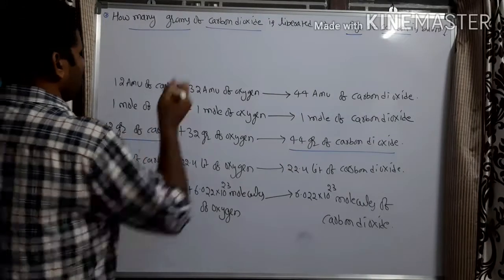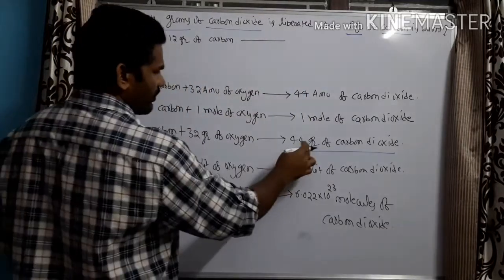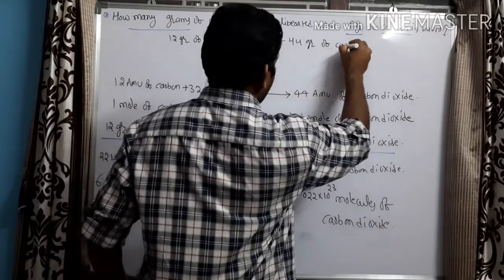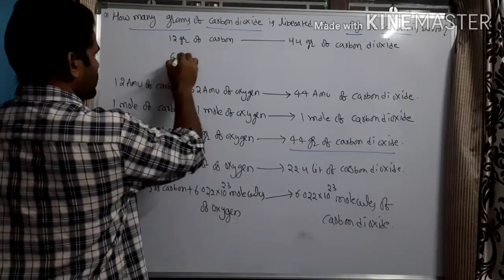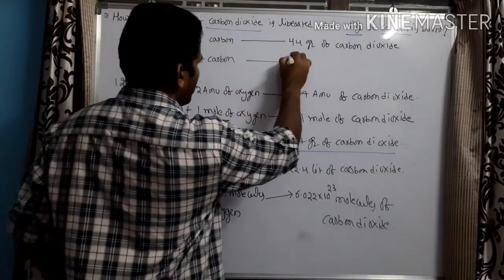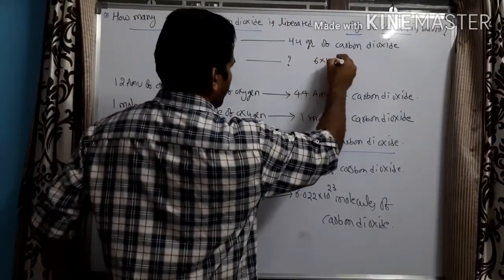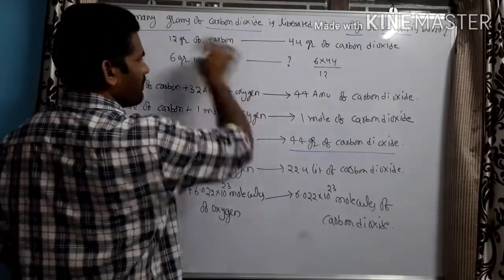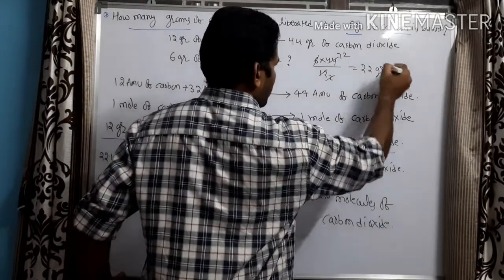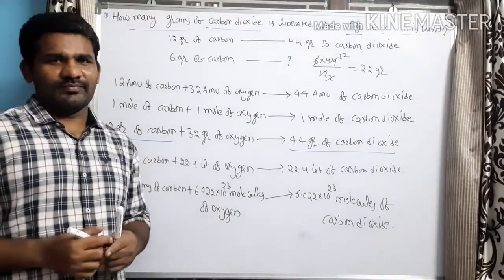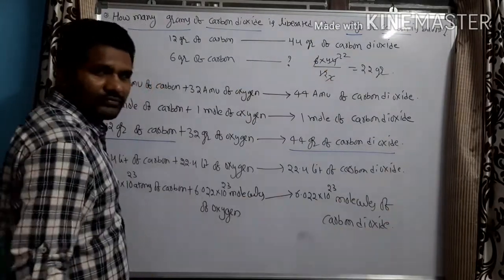In the problem, 6 grams of carbon is given. By cross multiplication: 6 × 44 ÷ 12 = 22 grams. Notice there is no need for detailed calculation — since the amount given is half of 12, you get half of 44, which is 22 grams of carbon dioxide.